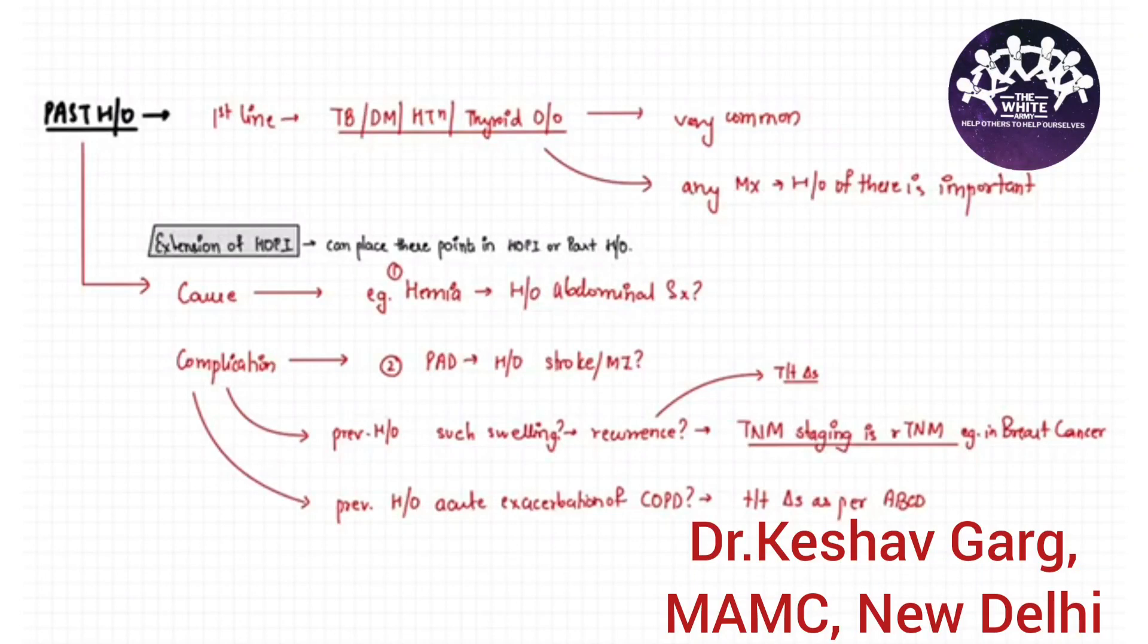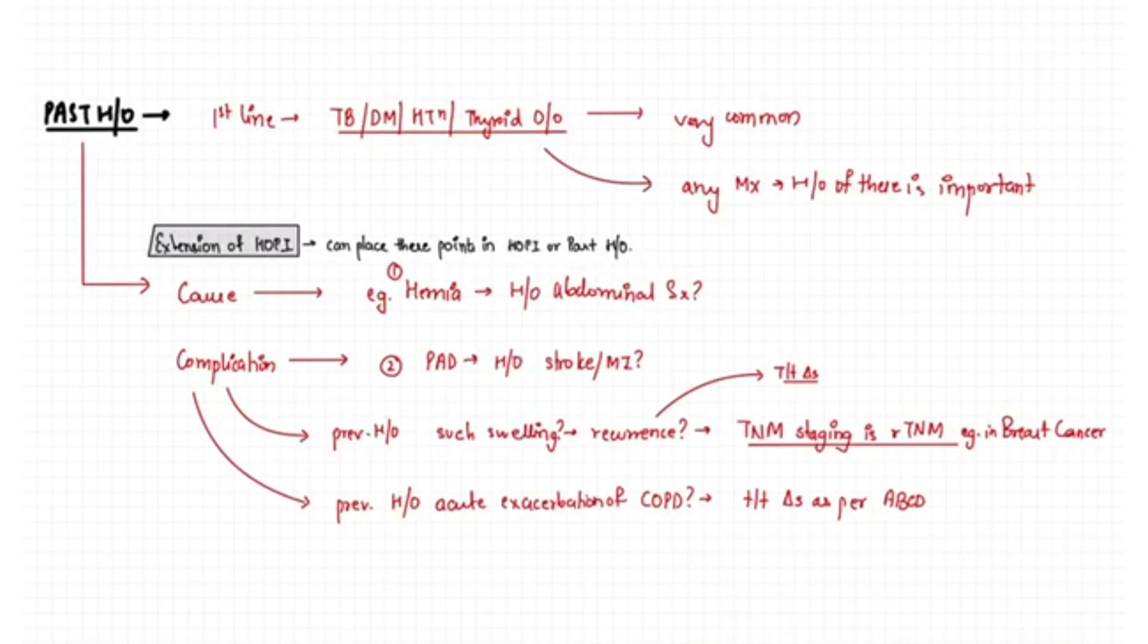In the past history, first we should always rule out if the patient has tuberculosis, diabetes, hypertension, or a thyroid disorder. These conditions are very common and they should always be ruled out beforehand.